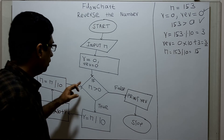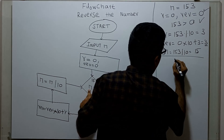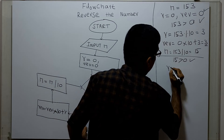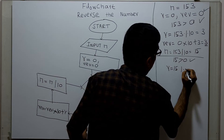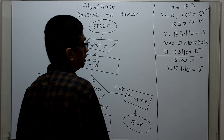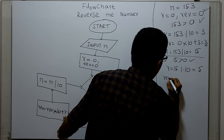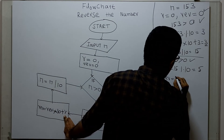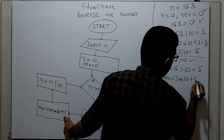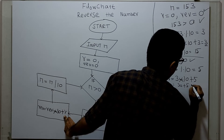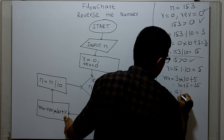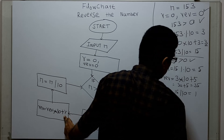Now checking: 15 greater than 0 — true. Remainder R equal to 15 mod 10. When you divide 15 by 10, the remainder is 5. Next, REV equal to REV multiplied by 10 plus R. The existing value of REV is 3, so 3 multiplied by 10 plus 5 equals 35. Now N equal to 15 divided by 10 — integer division — the value of N equals 1.